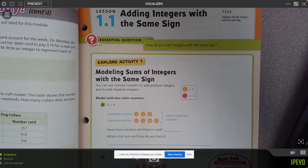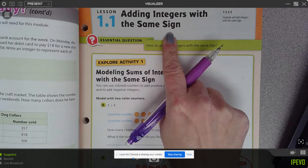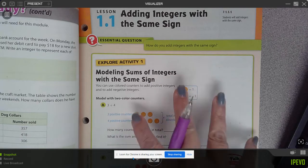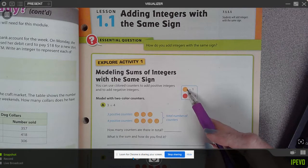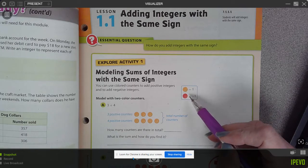All right, we're going to add integers with the same sign. That is what we're dealing with first. So in other words, if we have positives, when we add positives, when we have negatives, we add negatives. And the first way to represent that is using our two color counters, where the yellow is positive and the red is negative.